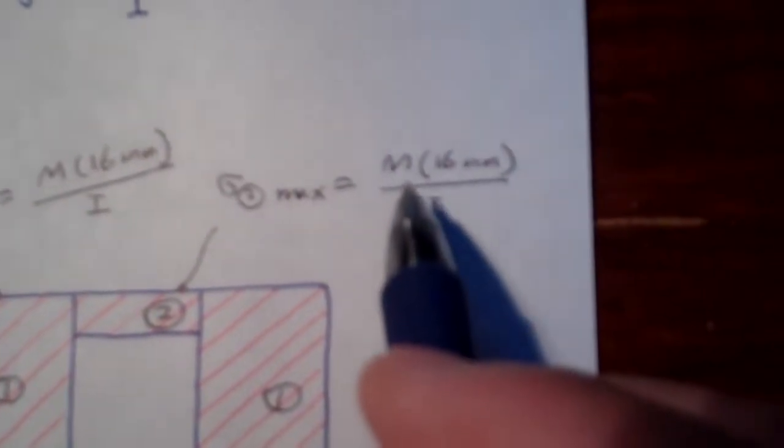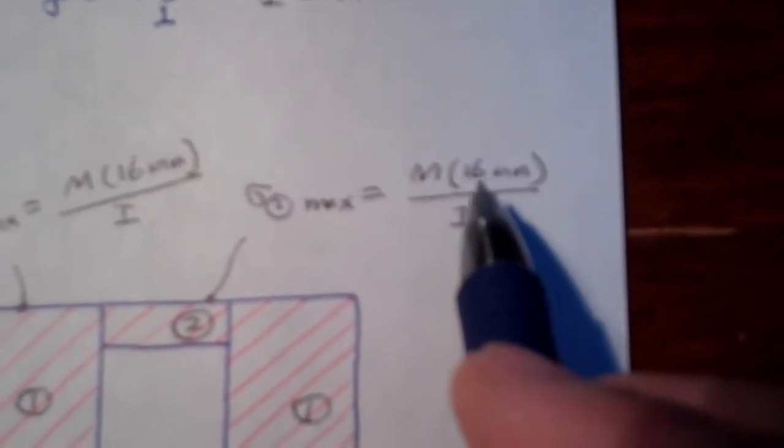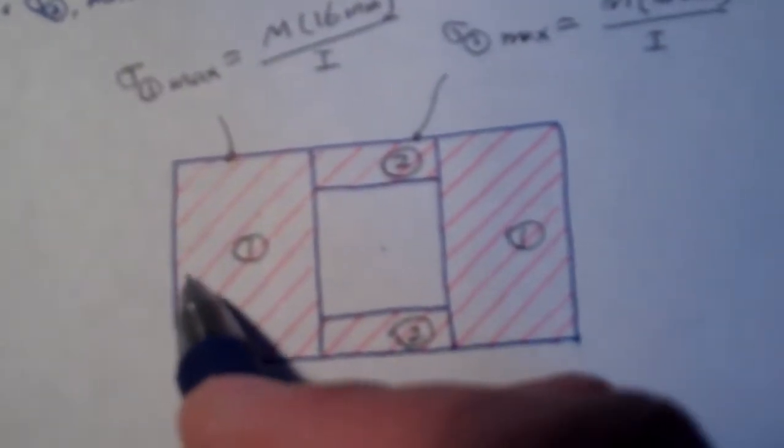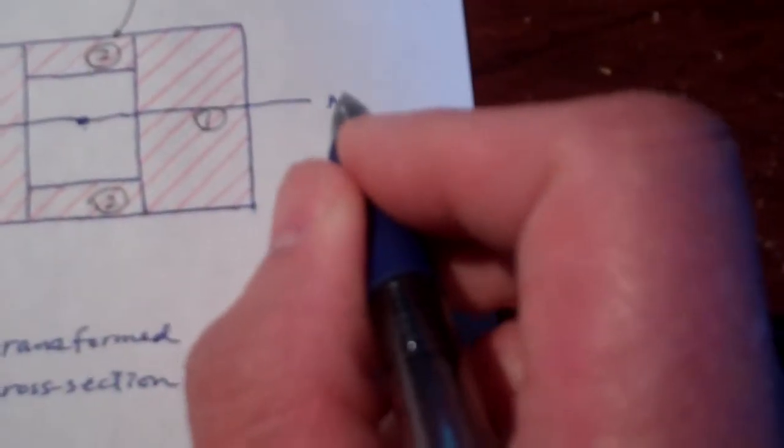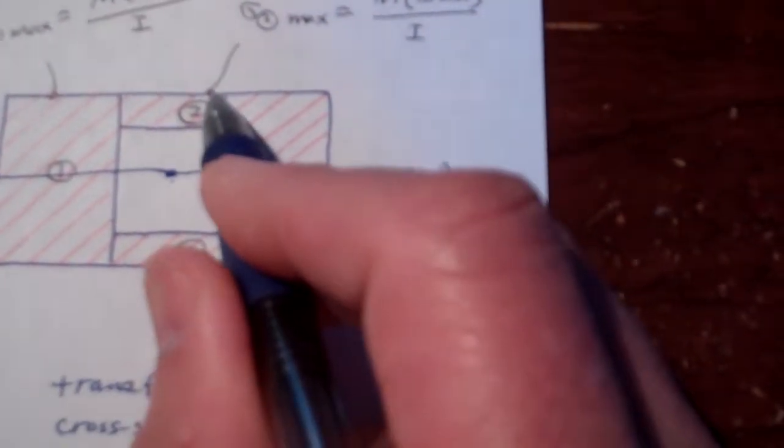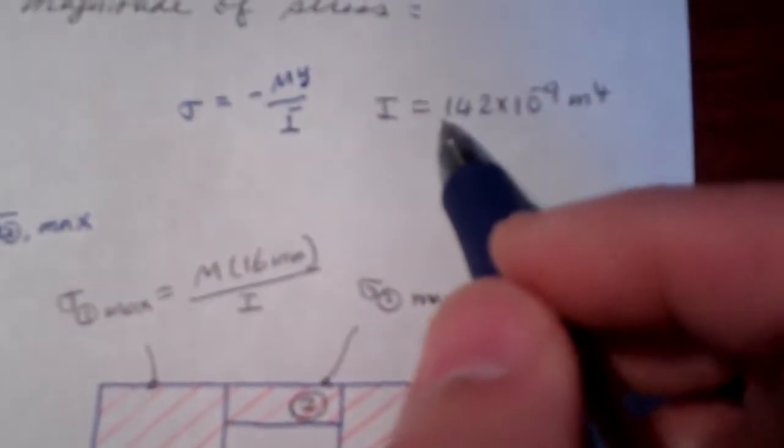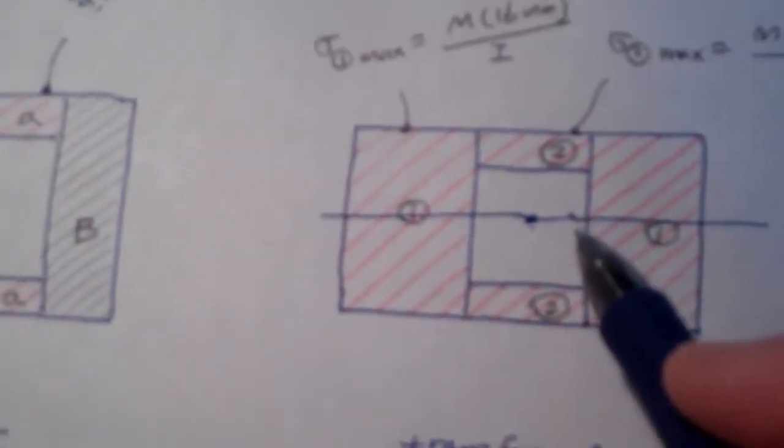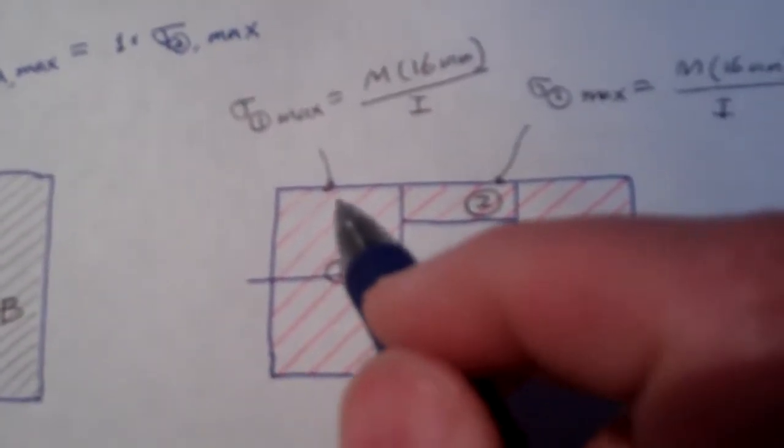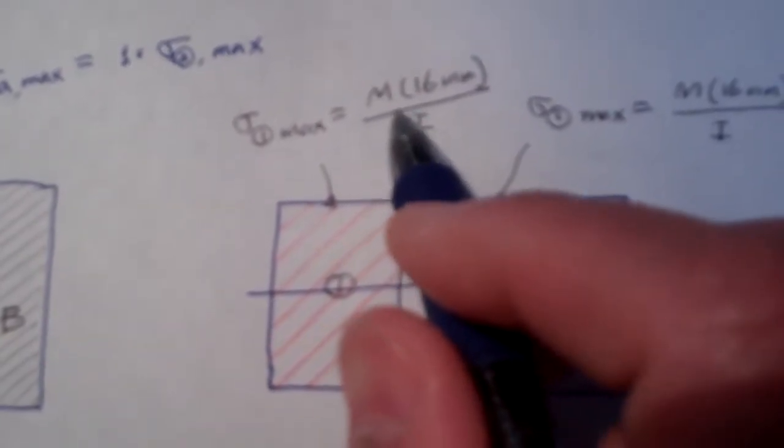For example, on material 2 here, the maximum stress is on the top or at the bottom. And for magnitudes, we don't care. So here I pick the top one for demonstration. The maximum stress for material 2 on the top is given by my, y is 16 millimeter, measured from the neutral axis. And the same, the maximum bending stress on material 1 is on the top.